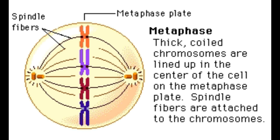After prophase, we enter metaphase, the second major phase of mitosis. In metaphase, we have the chromosomes created in prophase lining up vertically in the middle of the cell, with mitotic spindles attaching to each chromatid. Mitotic spindles from one side of the cell will attach to one sister chromatid, and mitotic spindles from the other side of the cell will attach to the other sister chromatid on those chromosomes.